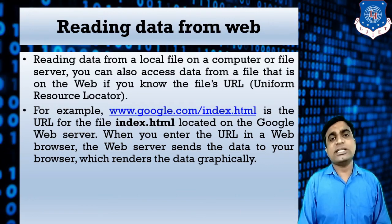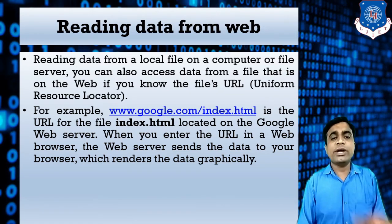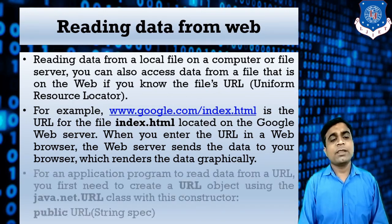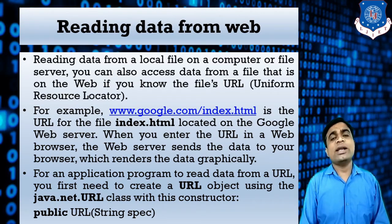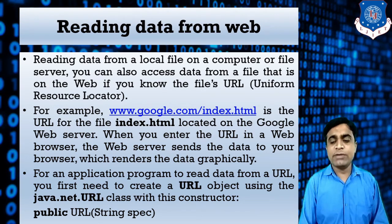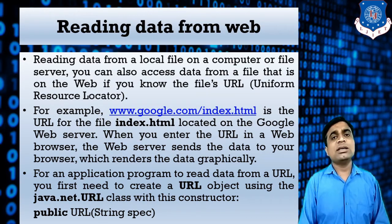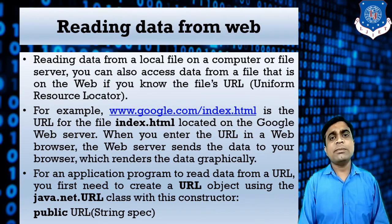For example, www.google.com/index.html — here index.html is the file name and google.com is the locator on the web server. When you enter a URL in a web browser, the server sends data which the browser renders graphically. But for a Java application to read data from a URL, you first need to create a URL object using the java.net.URL class by importing the java.net package.